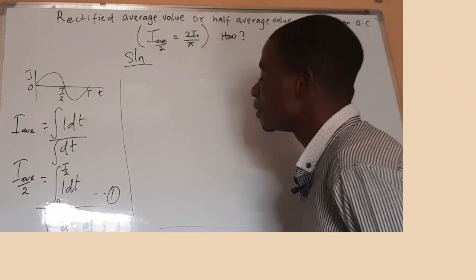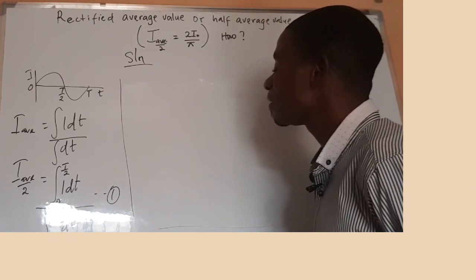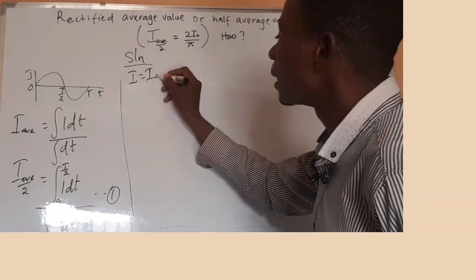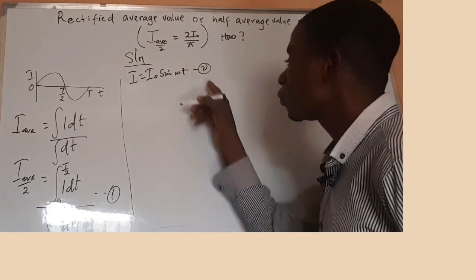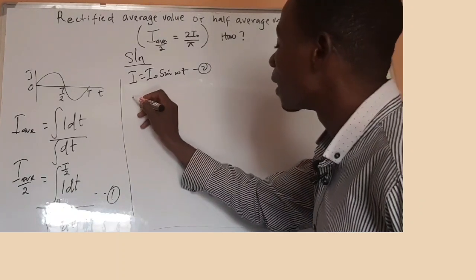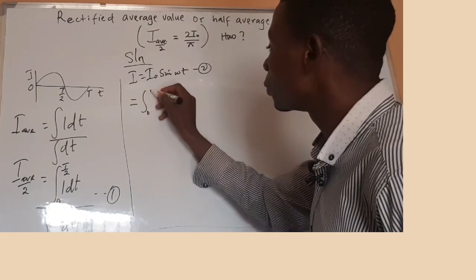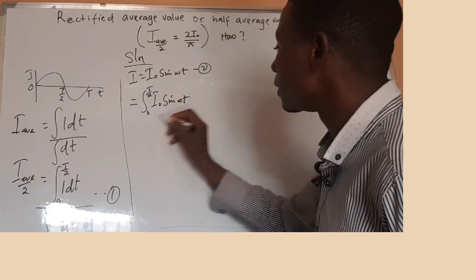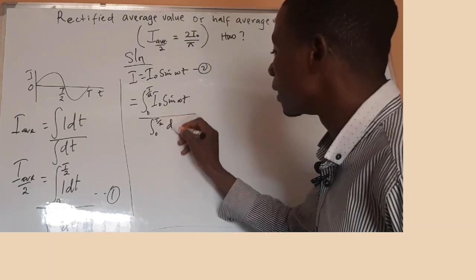That is equation one. Generally in an AC circuit, the graph of current against time is given by the equation I = I₀ sin(ωt). Let this be equation two. So putting equation two into equation one, we will have I half average equal to the integral from zero to T over two of I₀ sin(ωt) dt, all over the integral from zero to T over two of dt.